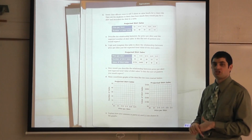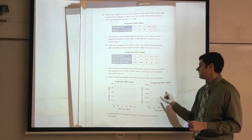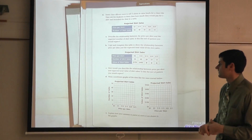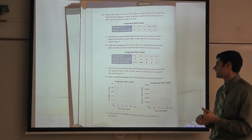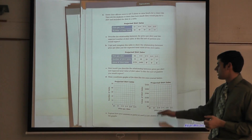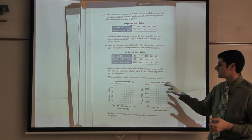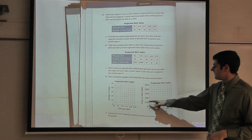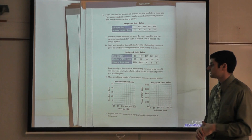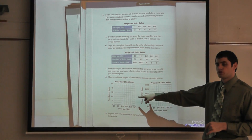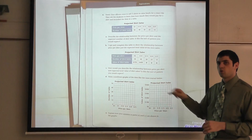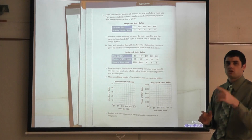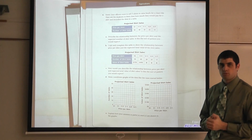For homework, I want you to answer Questions D and E. They've given you some graph paper — I'd like you to make coordinate graphs of the data like the ones started below. You'll look at the projected shirt sales and the value of shirt sales, create a coordinate graph at home, then answer Question E. Go ahead and pause the video and we'll see what you come up with.